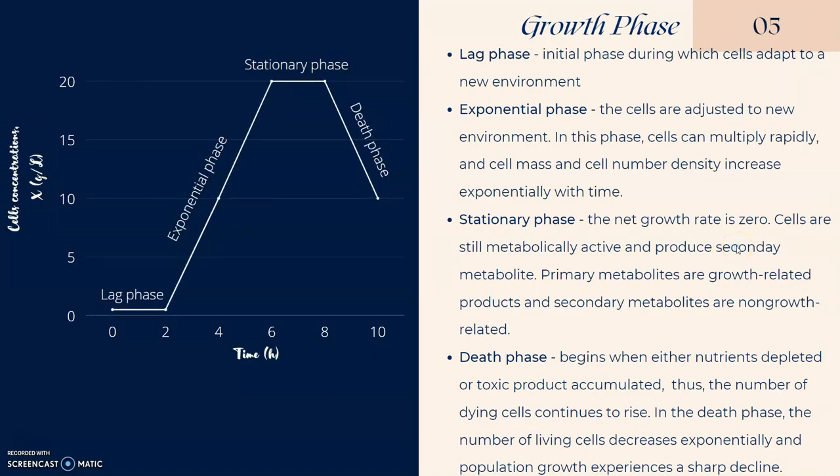The growth phase are divided into several phases which are lag phase, exponential phase, stationary phase, and death phase. During the lag phase, the cell concentration are constant. In this phase, the cells adapt to the new environment.